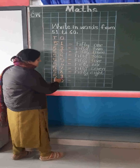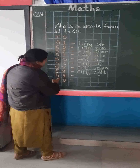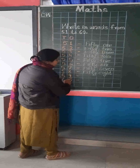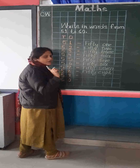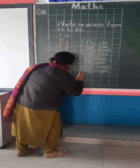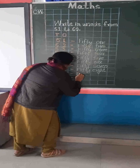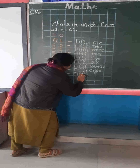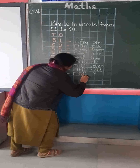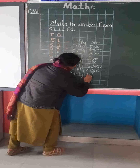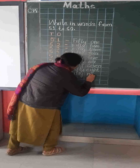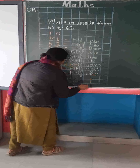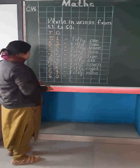Now we will write the spelling of 50, and then we will write the spelling of 9: F, I, F, T, Y. 50. And I, N, E. 59.